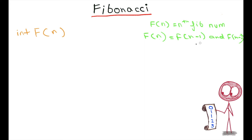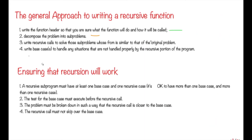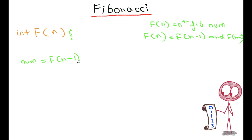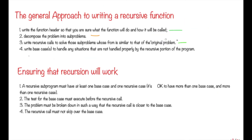The third step says to write a recursive call to solve those subproblems whose form is similar to the original problem. Our original problem is to calculate f(n), which is the nth Fibonacci number, so it is equal to f(n-1) plus f(n-2).